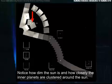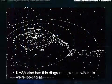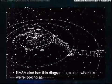Notice how dim the sun is and how closely the inner planets are clustered around the sun. NASA also has this diagram to explain what it is we're looking at.